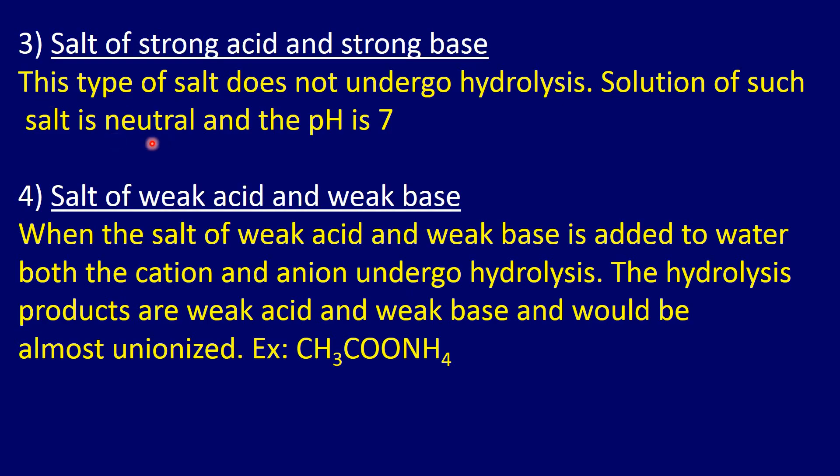Case 3: salt of strong acid and strong base — for example, sodium chloride. Sodium chloride is the salt of strong base sodium hydroxide and strong acid hydrochloric acid. The conjugate parts from both acid and alkali are weak. Since the conjugate parts are weak, no salt hydrolysis occurs and the solution is neutral.